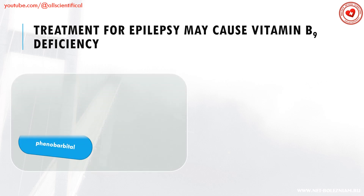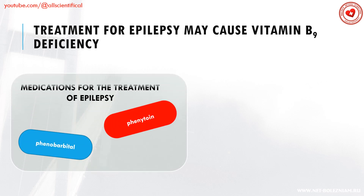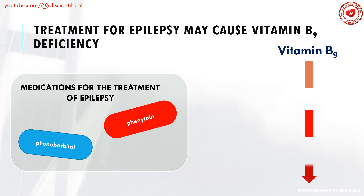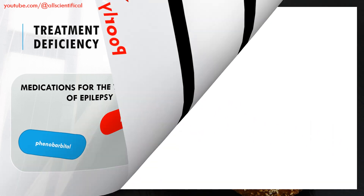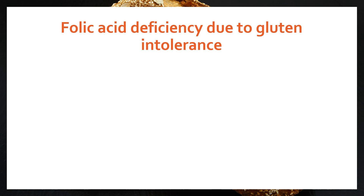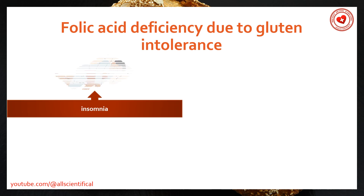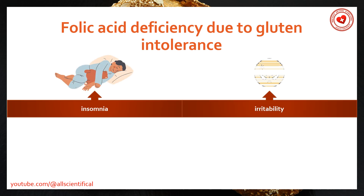Vitamin B9 is poorly absorbed when epilepsy is treated with phenobarbital and phenytoin, and while suffering from celiac disease, gluten intolerance. Folic acid deficiency is characterized by the following symptoms.